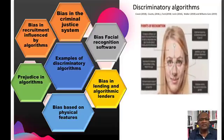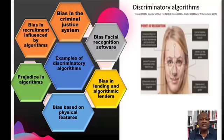Algorithms can also lead to errors in facial recognition software. Research from MIT in 2018 found that one particular algorithm could correctly identify a person's gender from a photograph 99% of the time, but only if the person was white.